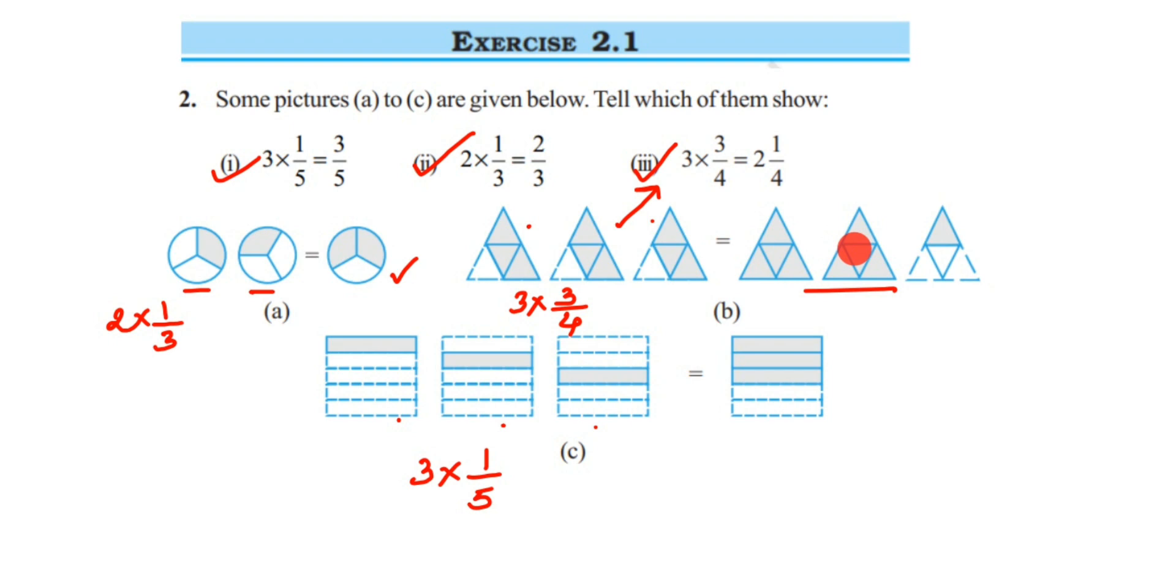So here also, 3, 3, 3 - it will be nine. I hope this question is clear. It's very simple: you have to just find out the shaded portion fraction and see how many pictures are there. In case you have any questions on this chapter, you can drop a comment. Thank you so much for watching.